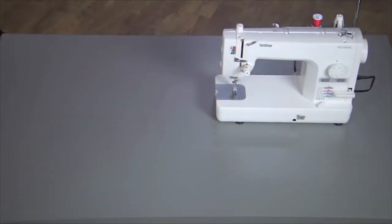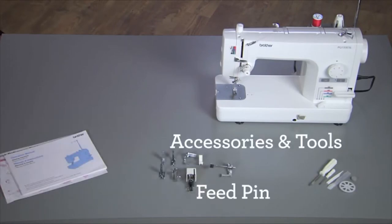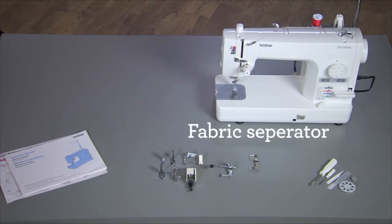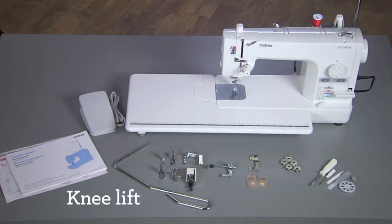What comes in the box? You'll find 7 different presser feet plus all these accessories and tools: feed pin, fabric separator, needles, bobbins, a foot controller, knee lift, and cover.